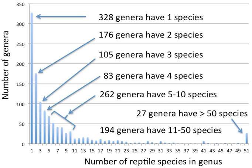The term comes from the Latin genus, a noun-form cognate with gignere, meaning to bear or to give birth to. Linnaeus popularized its use in his 1753 Species Plantarum, but the French botanist Joseph Pitton de Tournefort is considered the founder of the modern concept of genera.